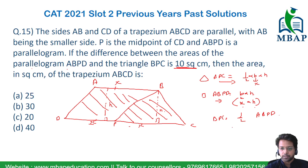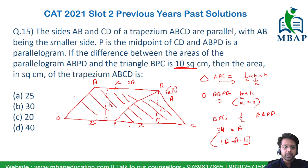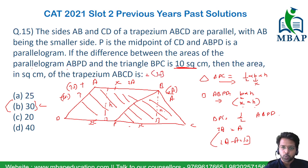If we assume the parallelogram area to be 2A, the triangle area becomes A. Since the difference is 10 square centimeters: 2A − A = 10, so A = 10. The triangle has an area of 10 square centimeters and the parallelogram has an area of 20 square centimeters. The total area of trapezium ABCD = 20 + 10 = 30 square centimeters.